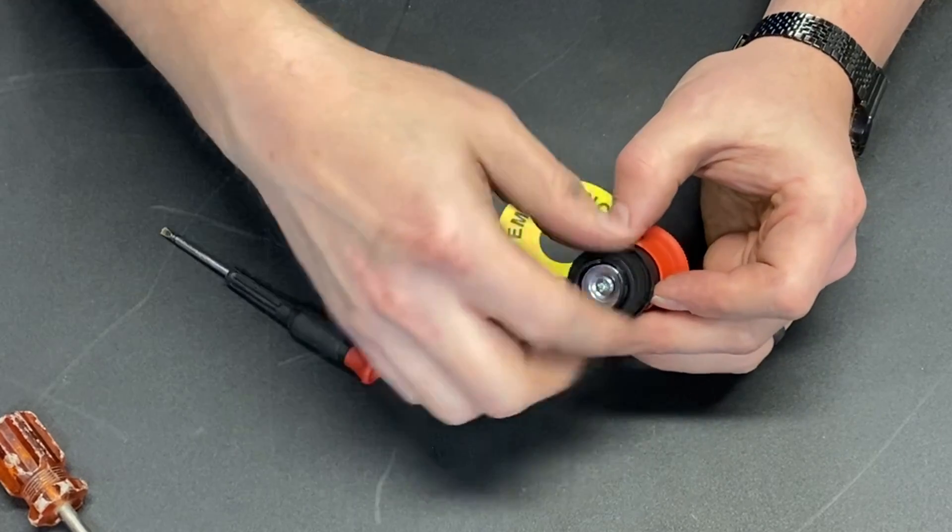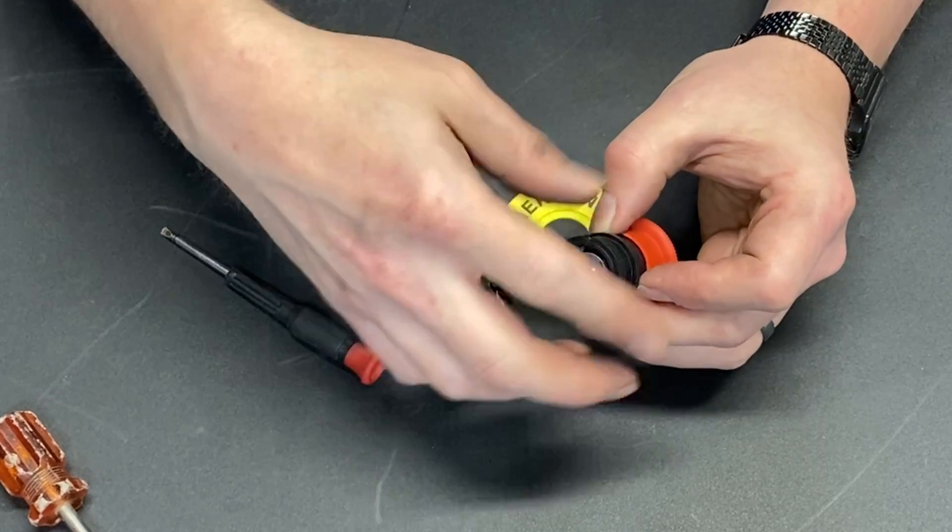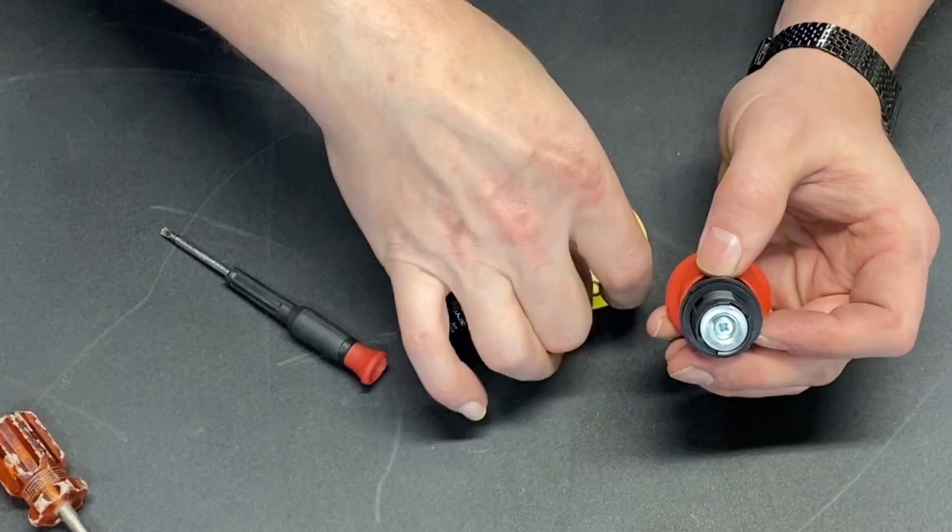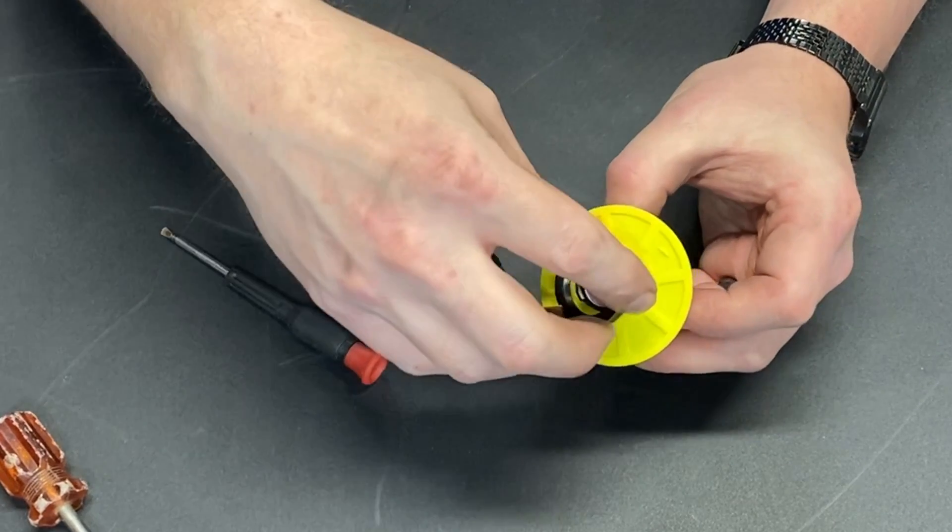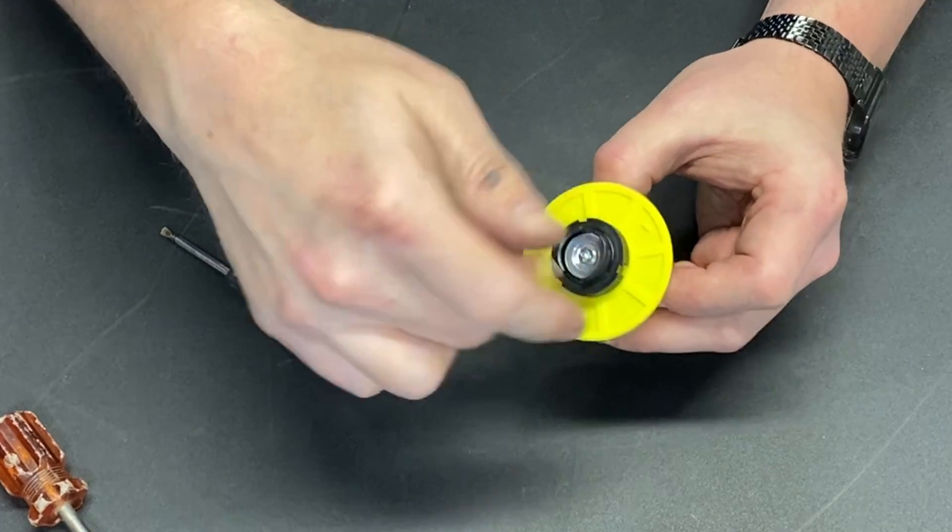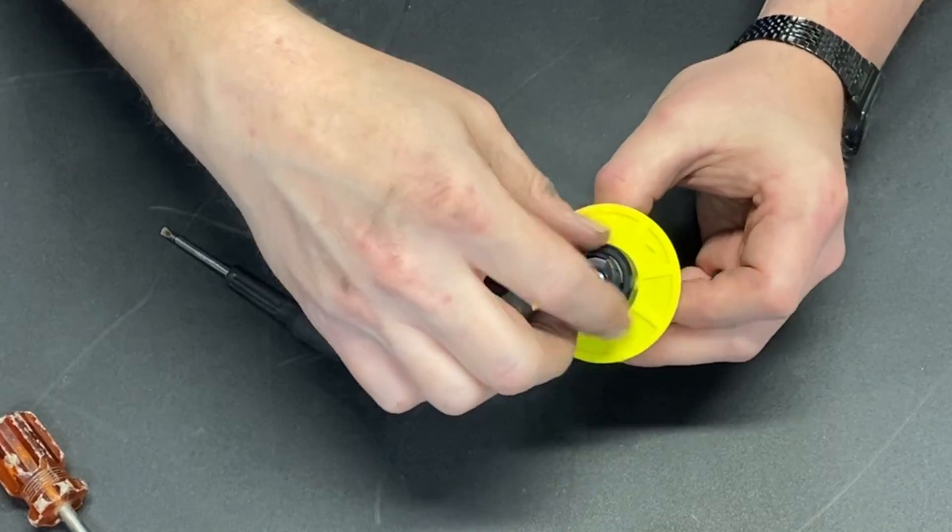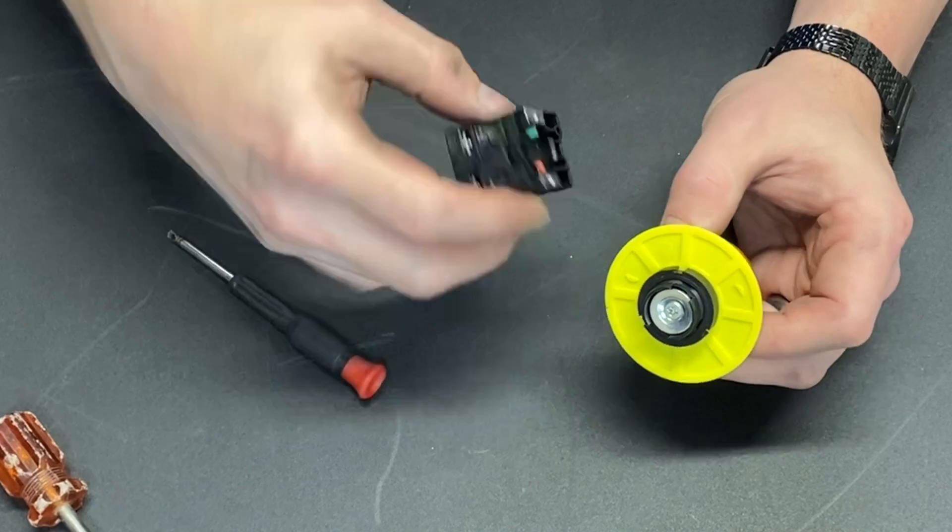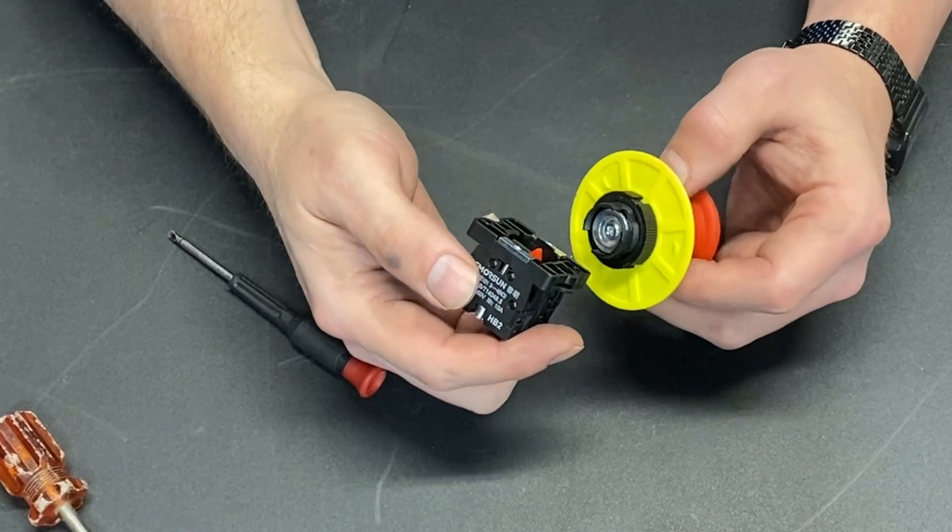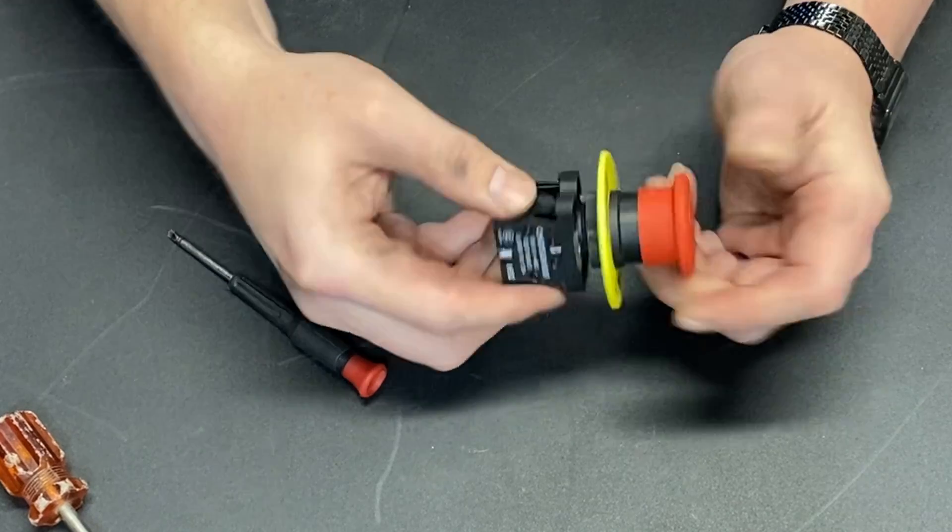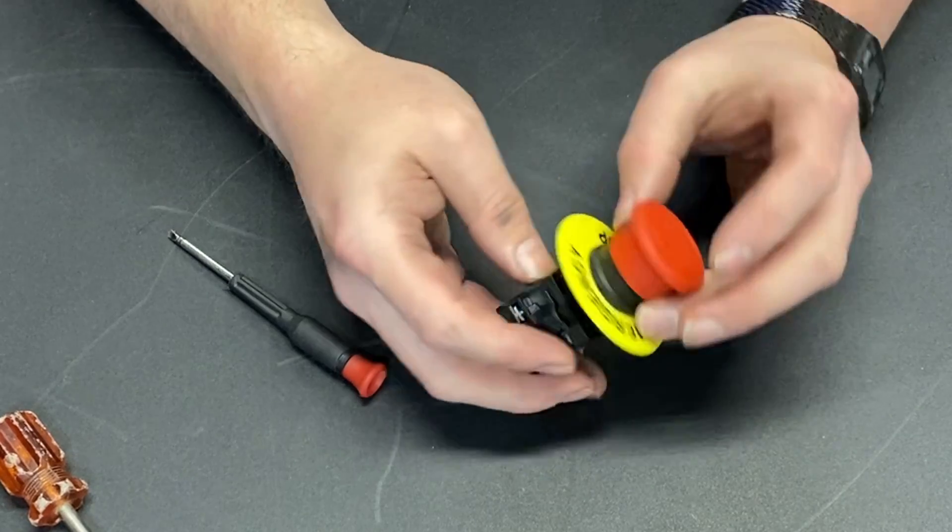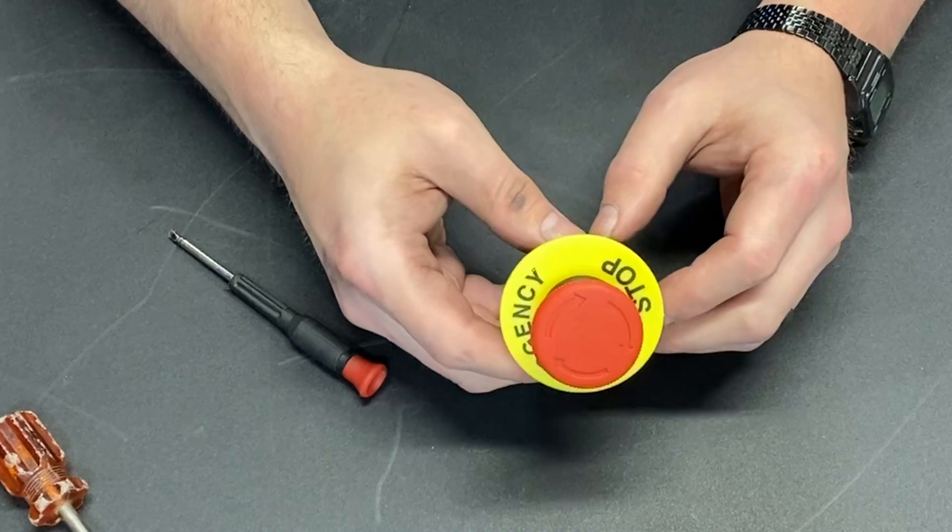So all we have to do is unscrew the nut. Let's say that this was the place where we're mounting it. Screw the nut back down and we can now snap this back into place. And you're set to go. So that's all it takes for mounting it. Really pretty simple.